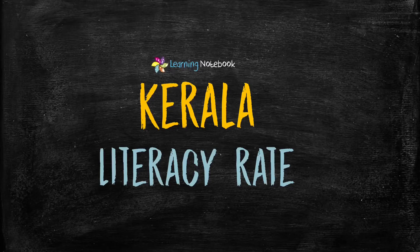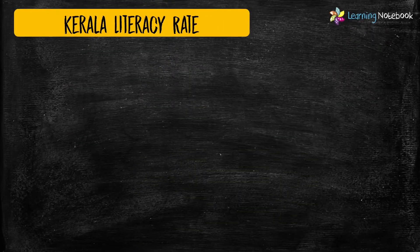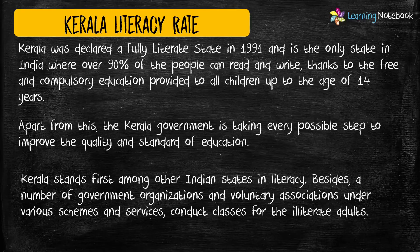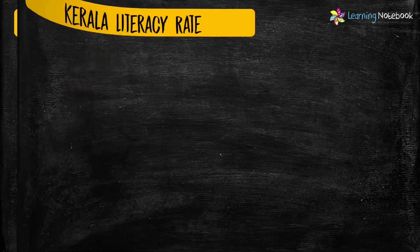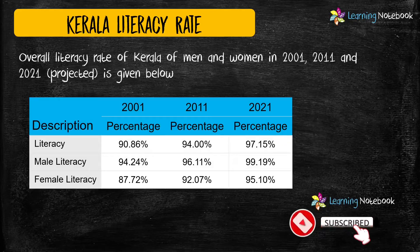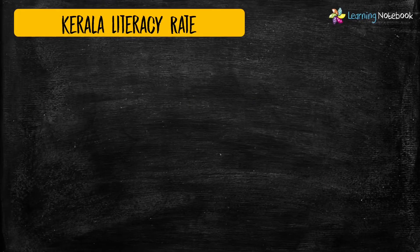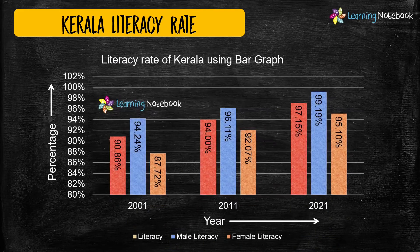The next idea for your Maths Art Integrated project is depicting the literacy rate of Kerala. Here, we have used a triple bar graph to show the overall literacy rate, male literacy rate, and female literacy rate of Kerala.